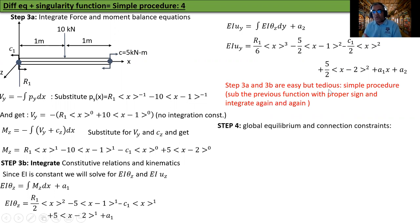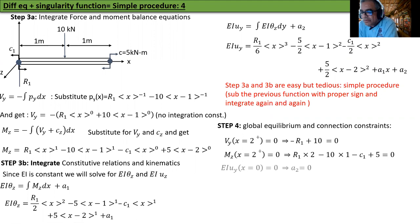Now we have four unknown constants: R1, C1, A1, A2. The first two are reaction forces and moments, the second two are from displacements and rotation. Now we do global equilibrium and connection constraints. Global equilibrium says Vy at x equal to 2 plus - the plus means evaluate just past the end, not before. This matters for step functions. Evaluate and get minus R1 plus 10 equal to 0.